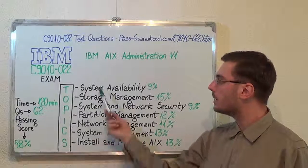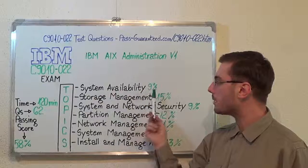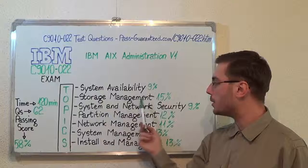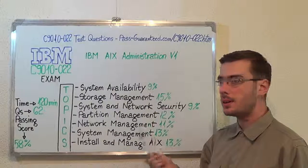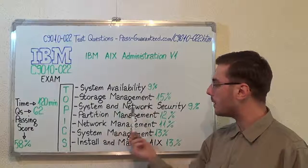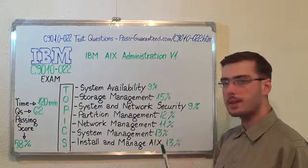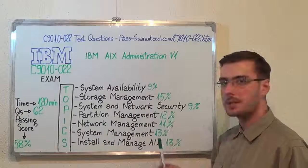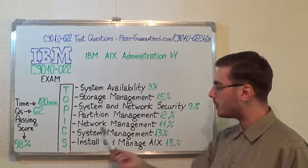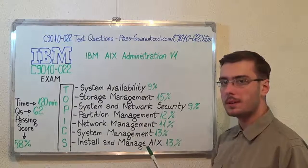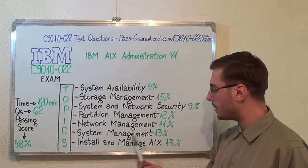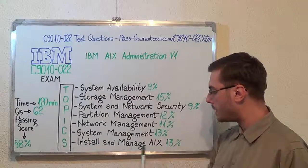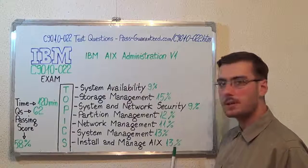The first one, system availability, which makes up 9% of the total amount of questions. Second, storage management, with 15%. The third, system and network security, with 9%. Then partition management, with 12%. After that, network management, with 11%. Next, system management, with 13%. And the last one, install and manage AIX, with 13%.